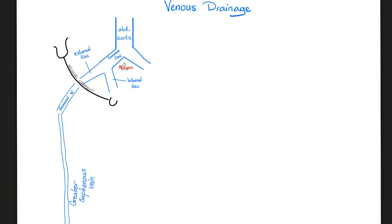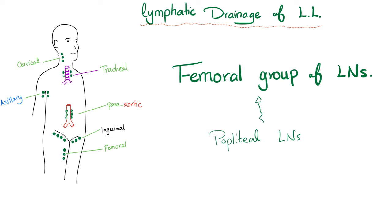Venous drainage is very similar to the arterial with a famous exception: the greater saphenous vein, the longest vein in the body, which drains into the femoral vein. The inguinal ligament is stretched between the anterior superior iliac spine and the pubic tubercle. All lymphatic drainage of the lower limb ends up in the femoral group of lymph nodes. Lymphatics from the heel and lateral foot go to the popliteal lymph nodes first and then eventually to the femoral group.